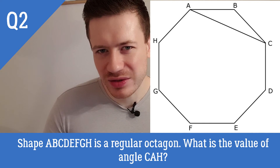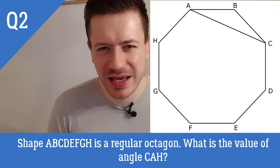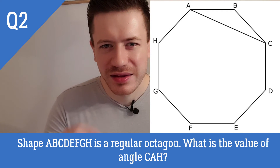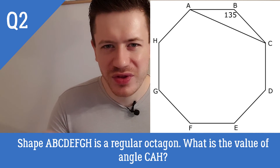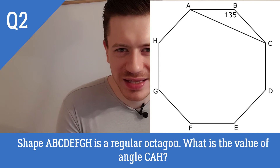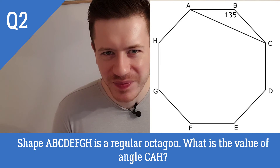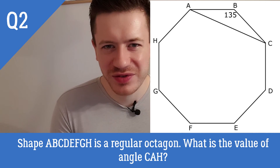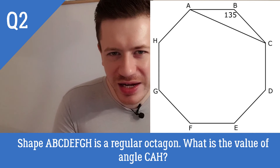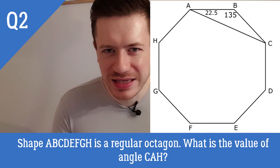Now we have the interior angle of 135 degrees, which repeats around the octagon. The secret lies in triangle ABC. The angle at B is also 135 degrees because it's also an interior angle. Since it's an isosceles triangle, we do 180 minus 135 to get 45 degrees left for the two acute angles at A and C. Dividing 45 by 2 gives 22.5 degrees for each of those acute angles.